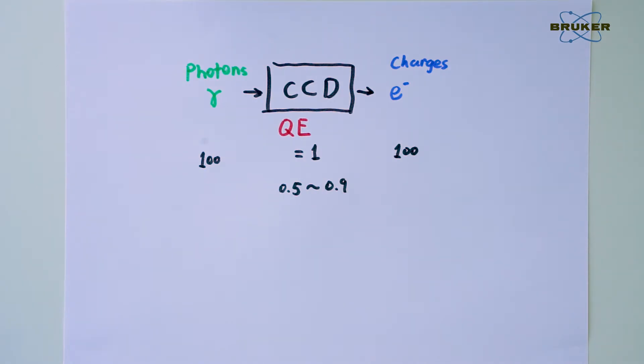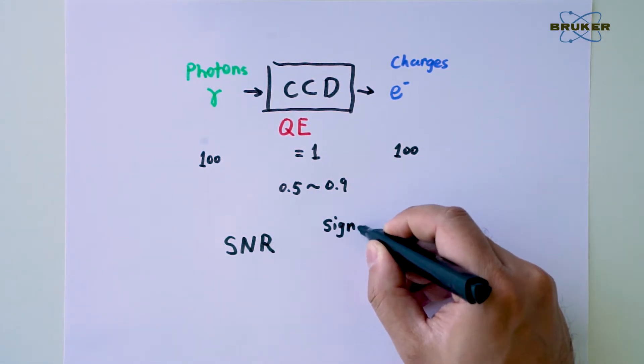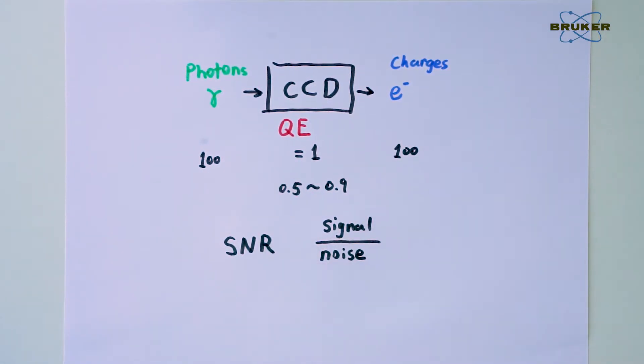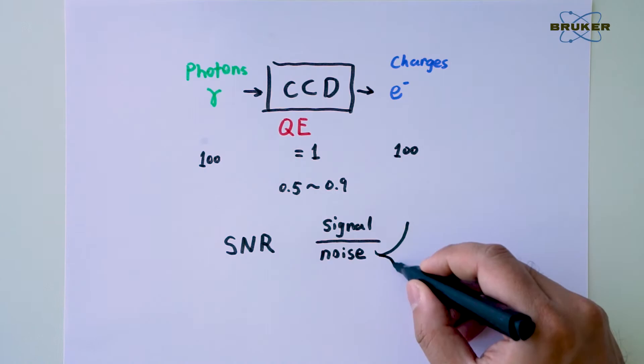But quantum efficiency is not what really matters at the end of the day. What we truly want in Raman spectroscopy is a good signal-to-noise ratio. So, let's look at the three main types of noise of the CCD.